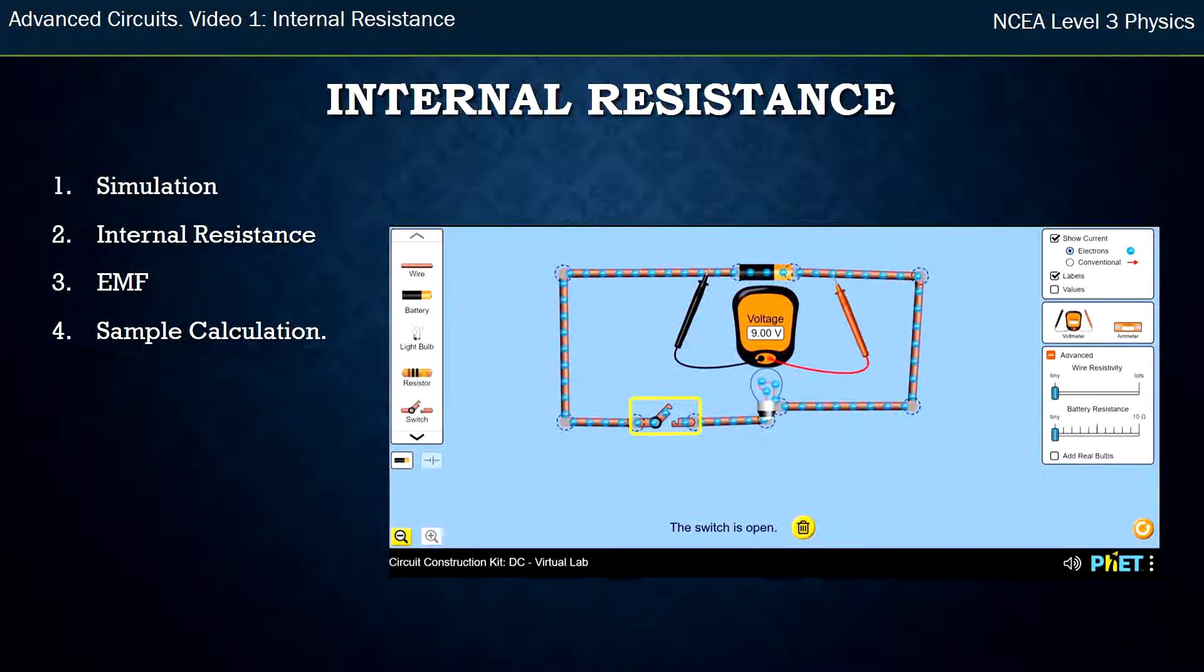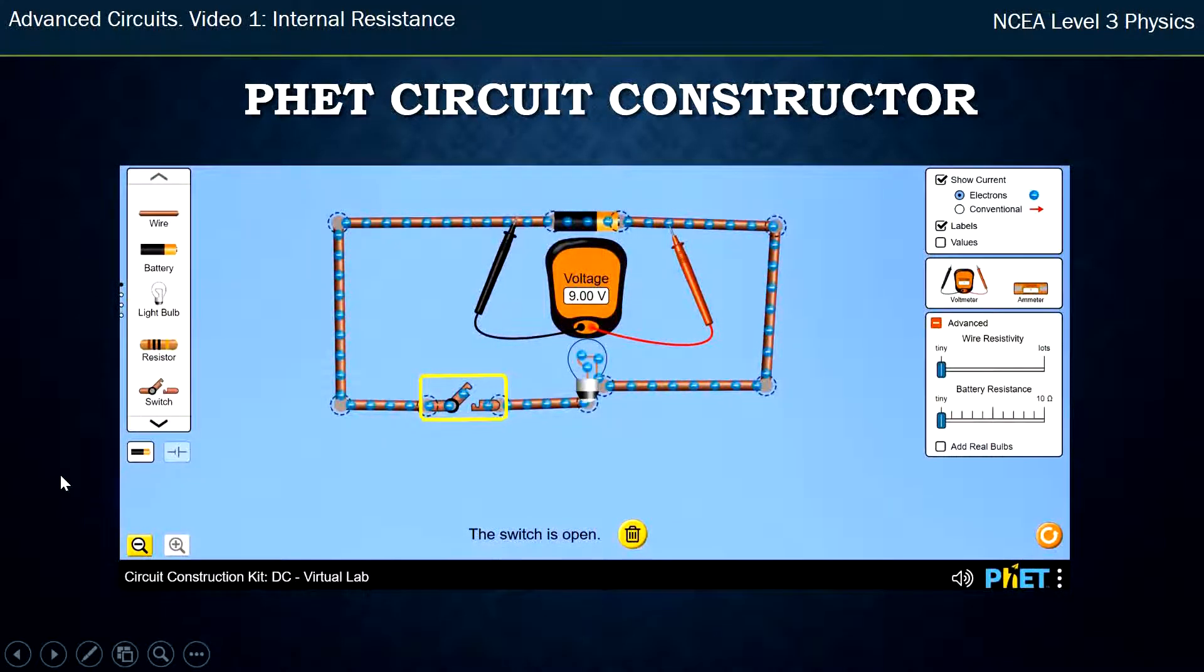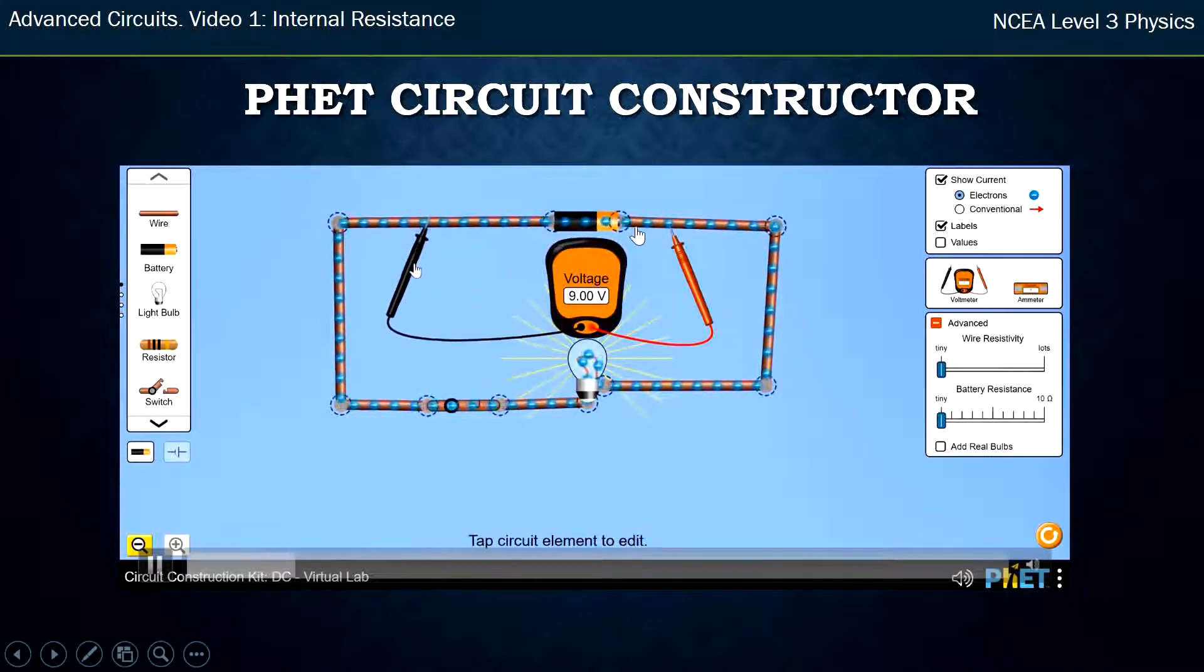We're going to start by looking at this PhET simulation. So here I've built a little circuit with a battery, a switch, and a bulb. At the moment, it's an ideal battery—a nine-volt battery. It measures nine volts across here. If I move the voltmeter side to side, I still measure nine volts, and I keep moving them around the circuit, I'm still going to measure nine volts.